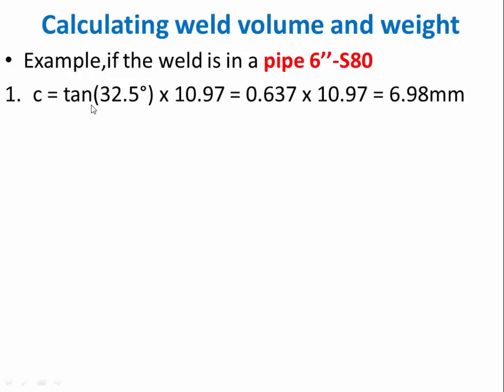C equals tan 32.5° × thickness, so we will get 6.98 mm. Width is 2(0.637 × 10.97) + 3 = 16.975 mm. This is tan B × thickness plus 3.